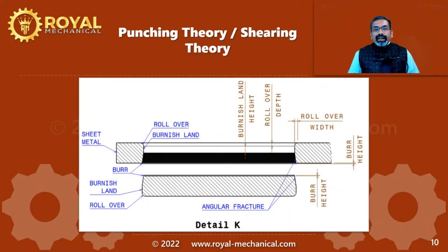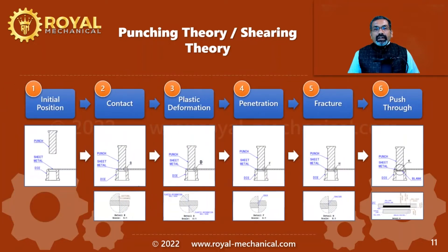Now let's get started with the punching theory or the shearing theory. The punching theory explains the behavior of the sheet metal when it gets sheared. The punching theory can be explained in six stages.